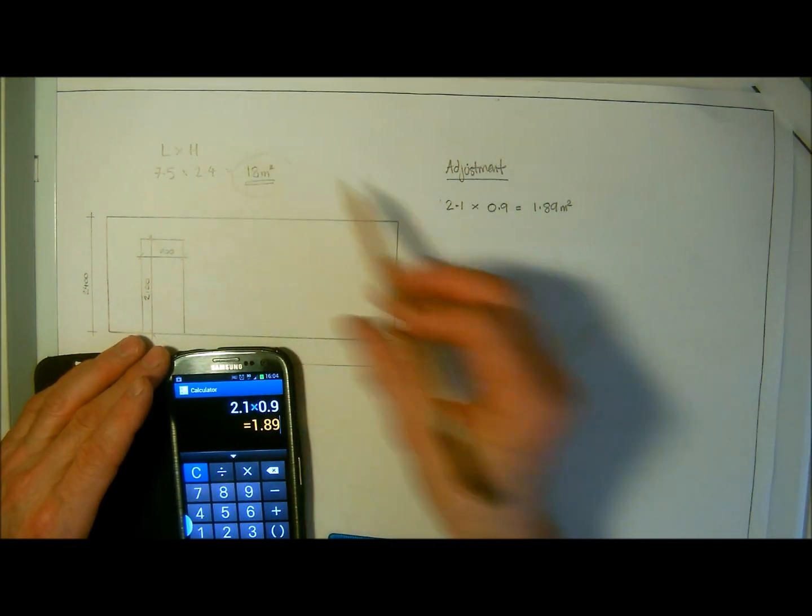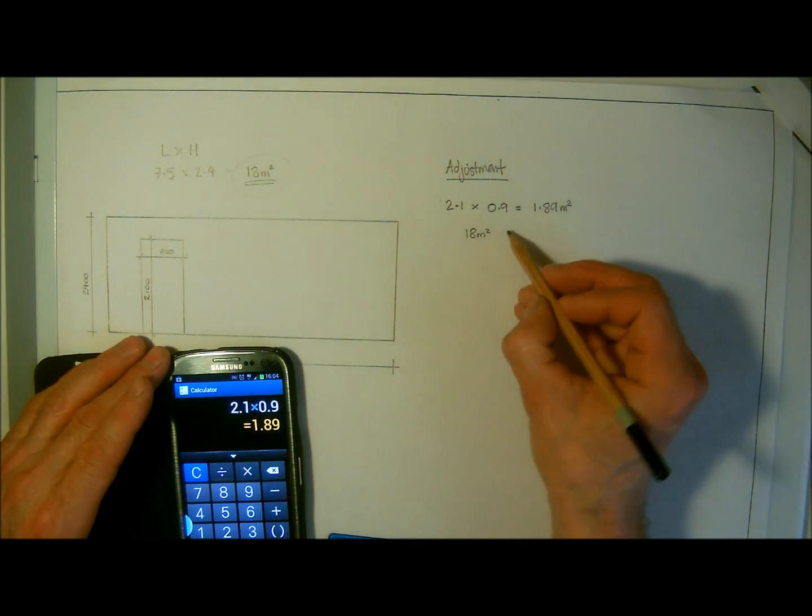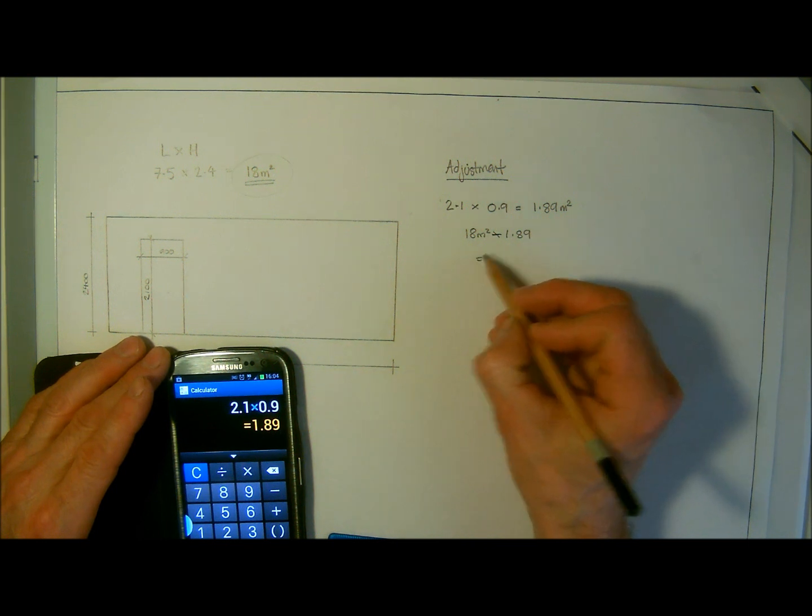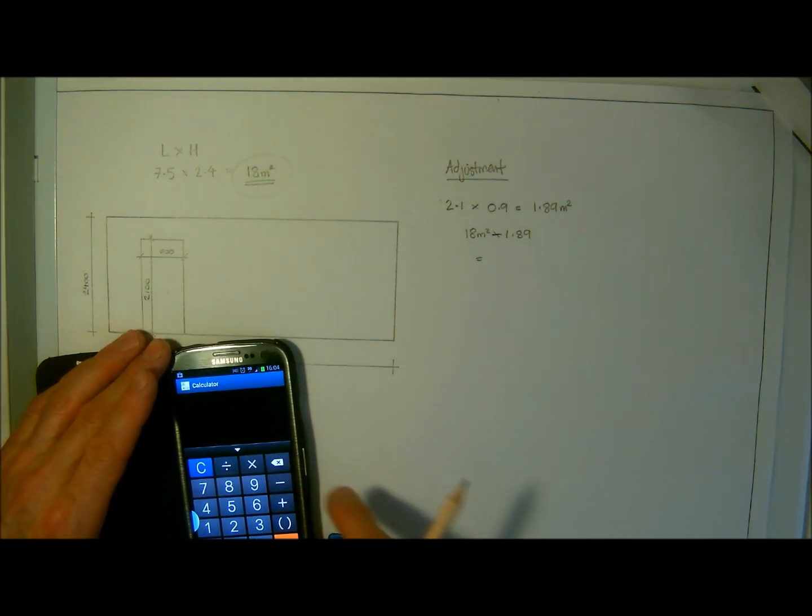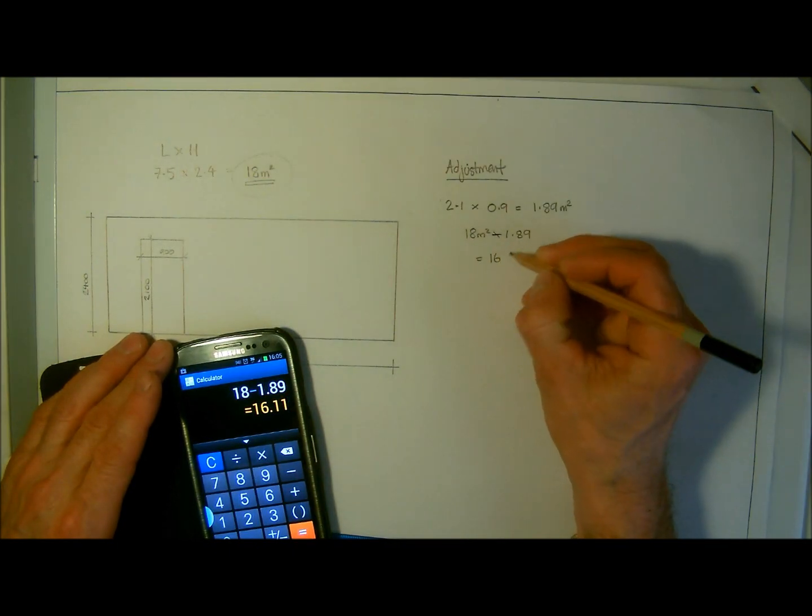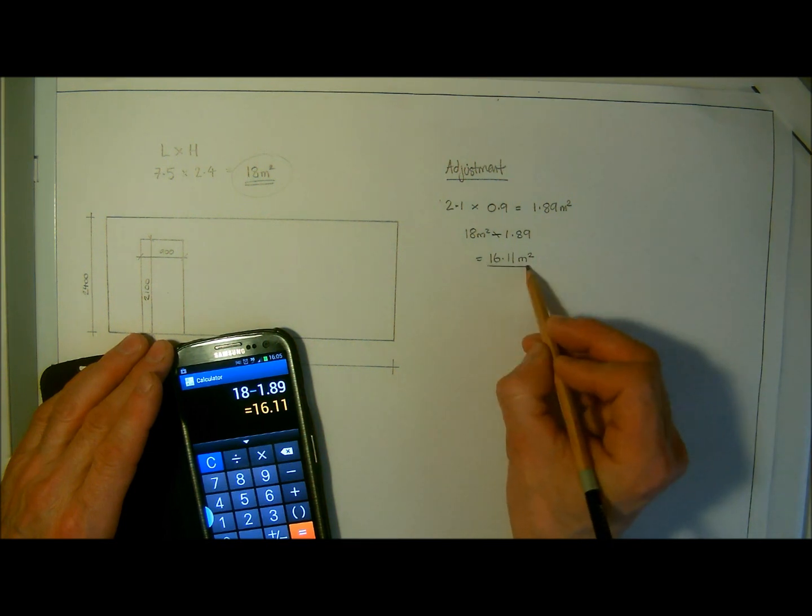This is the total that we had. What we need to do is have eighteen meters squared minus one point eight nine. That will give us our total area with the deduction of the door. Eighteen minus one point eight nine equals sixteen point one one meters squared, the total physical surface area that we need bricks and blocks for.